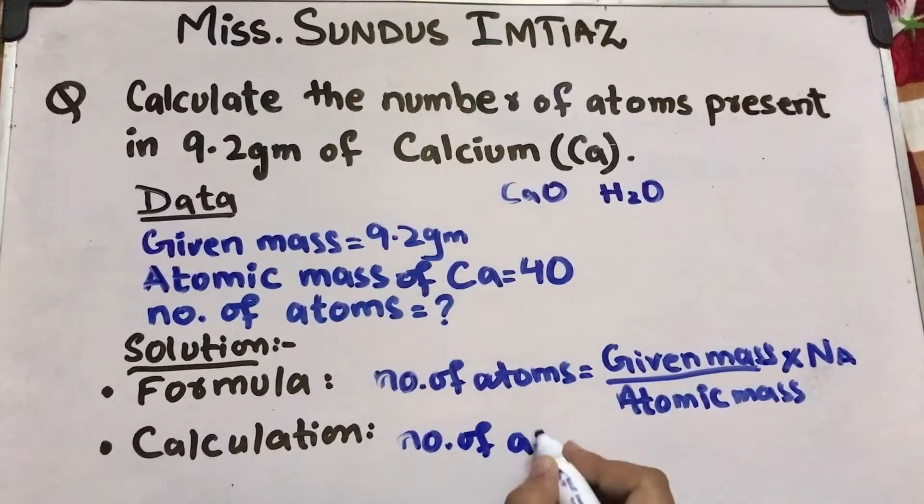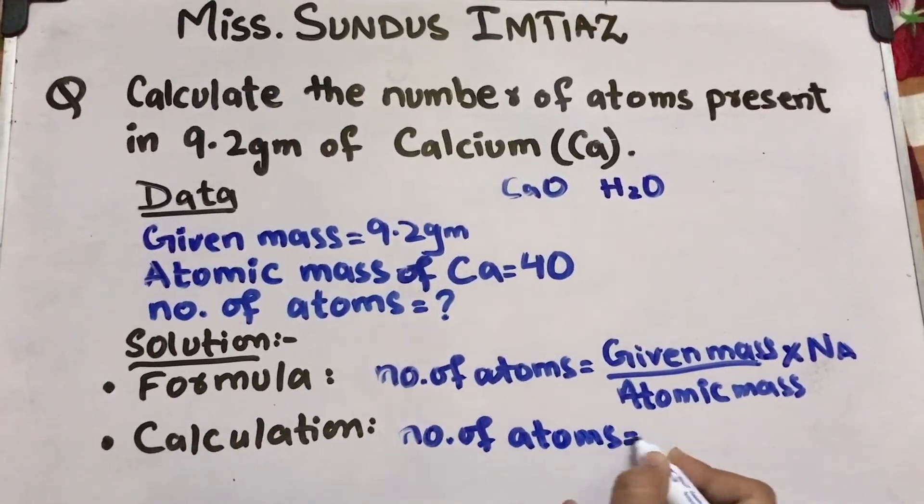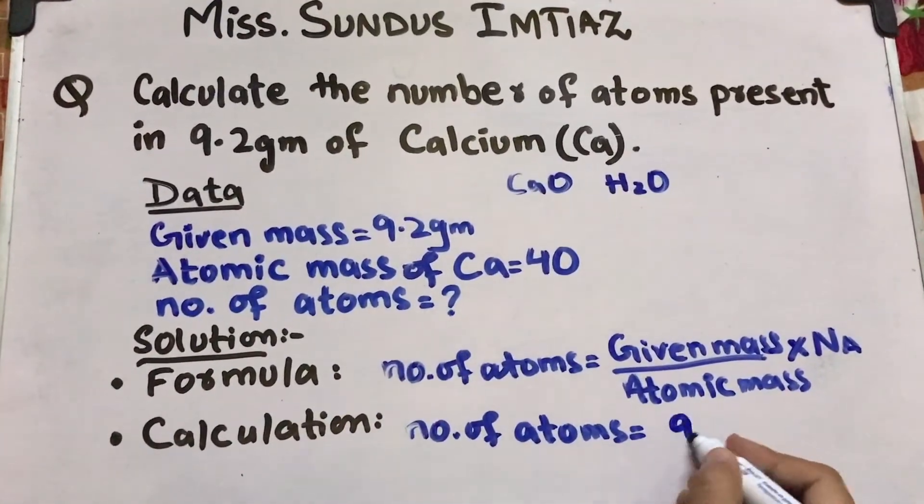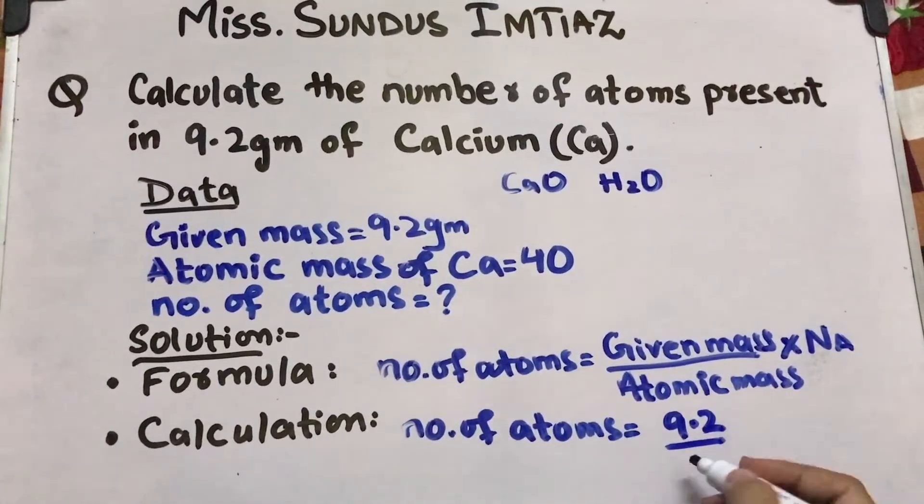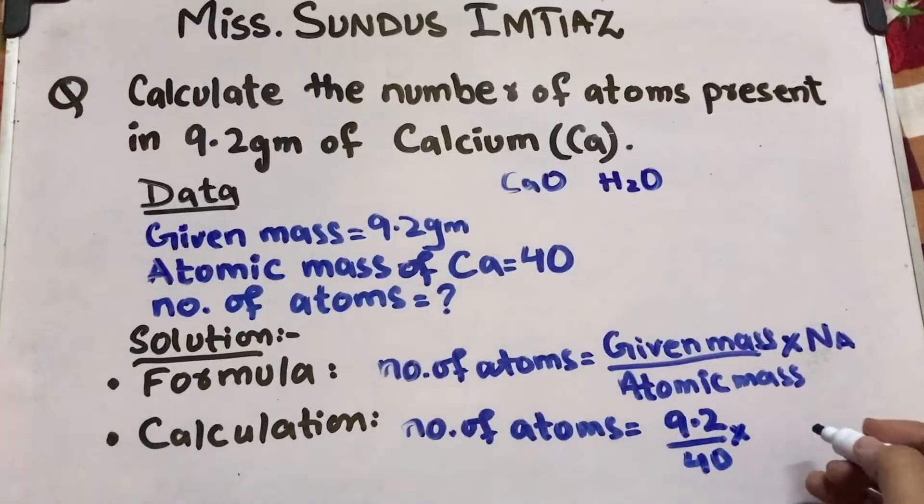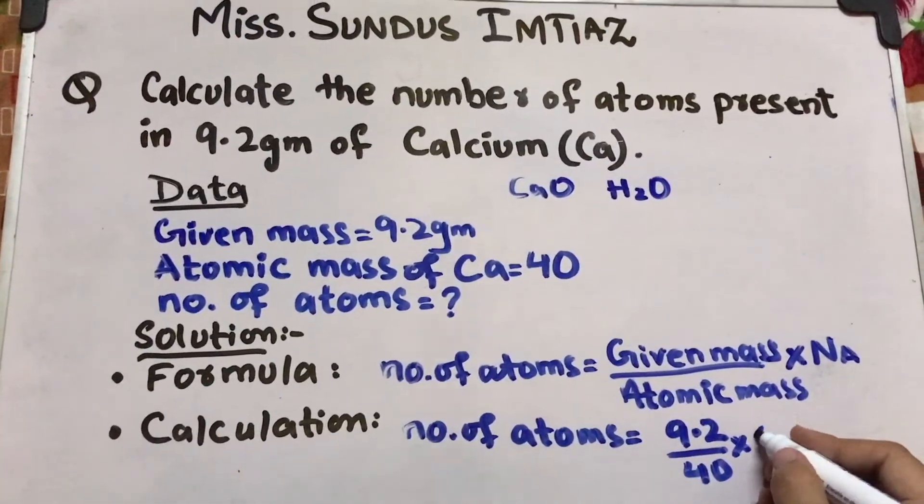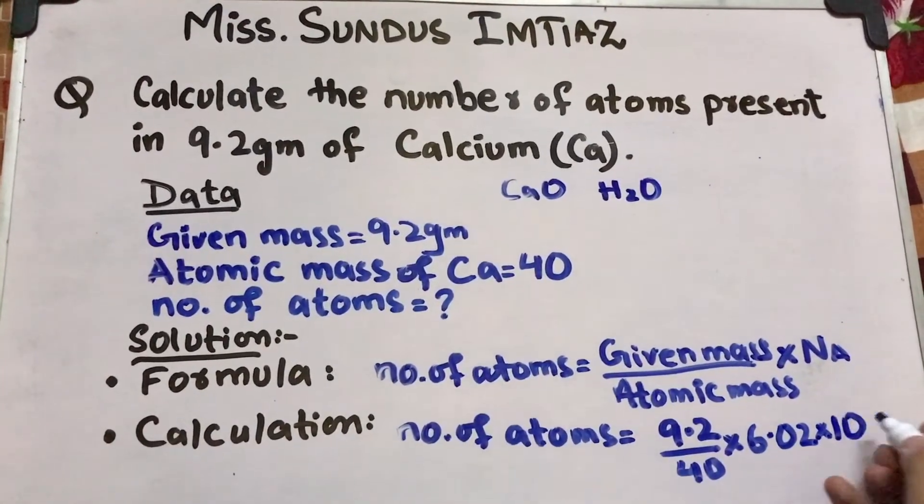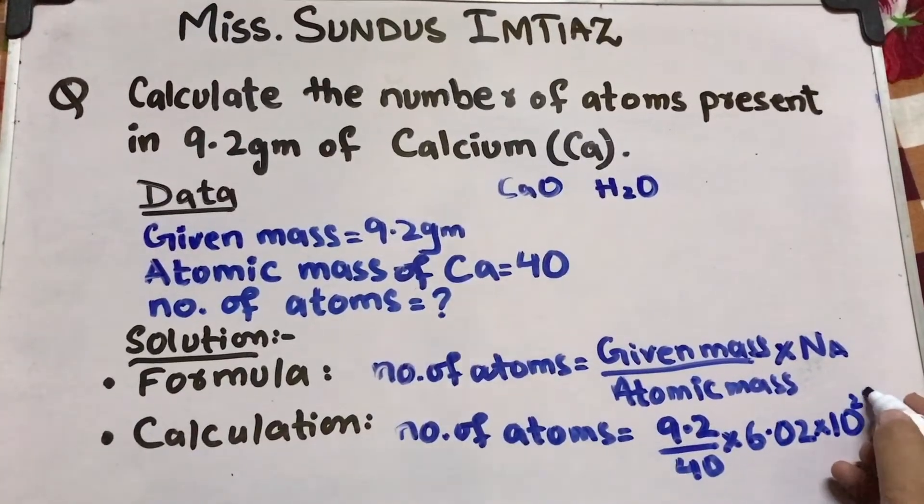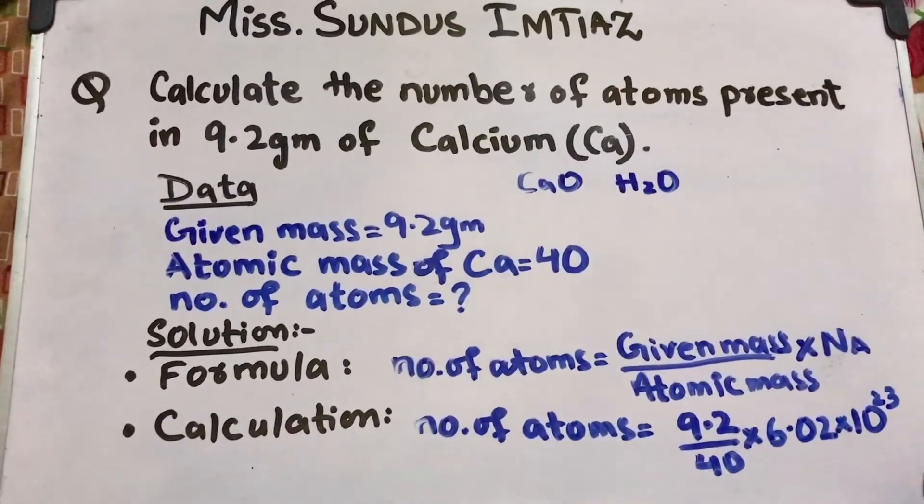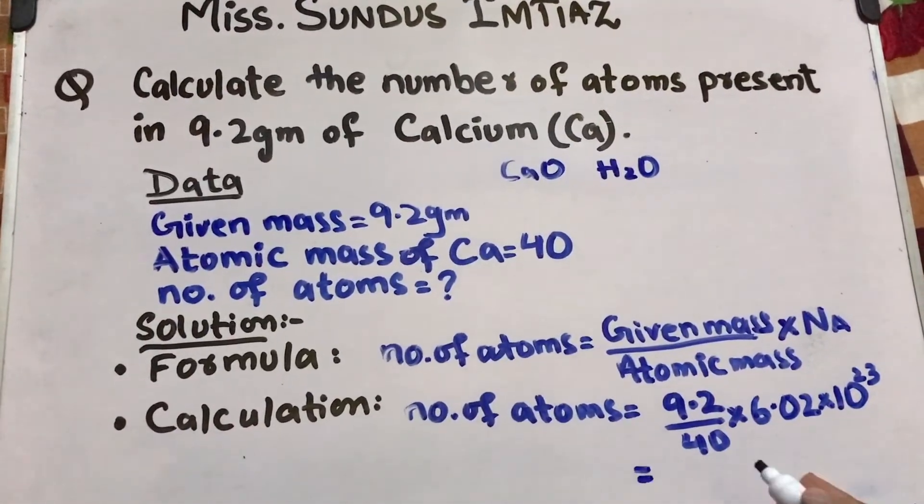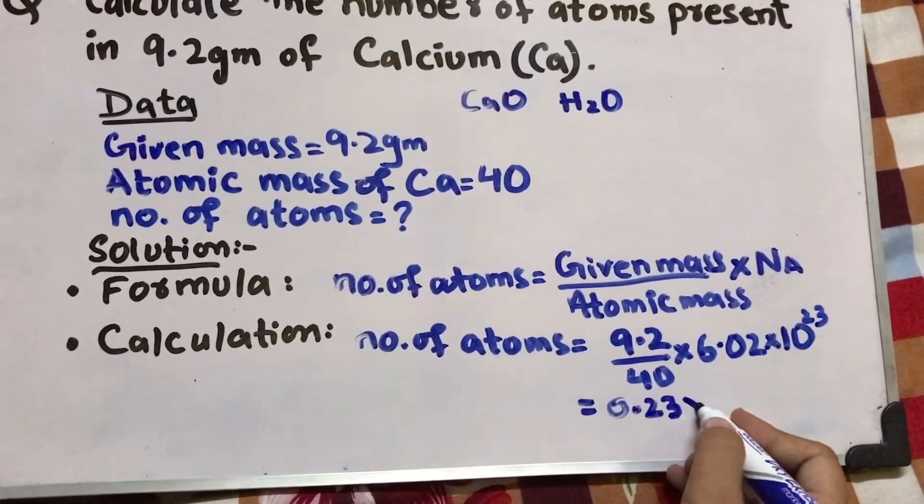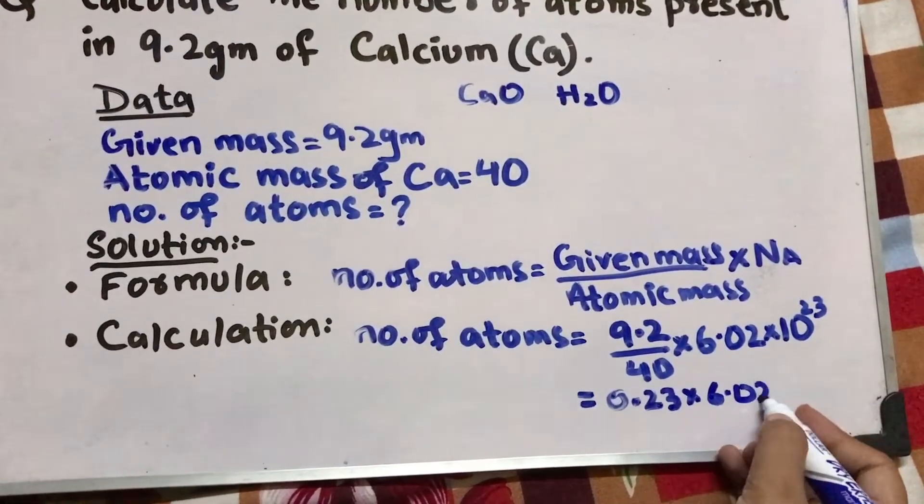So the number of atoms is equal to given mass, which is 9.2, divided by atomic mass, which is 40, multiplied with Avogadro's number. Always remember and memorize this number is 6.02 times 10 to the power 23. So when you divide, you will get 0.23 multiplied with Avogadro's number.